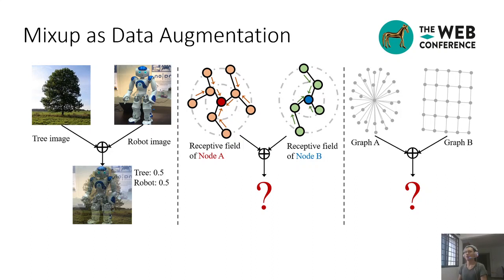Graph neural networks learn nodes' representations via the message-passing mechanism, which aggregates the representations between each node and its neighbors at each layer. As a result, the representation of a node relies on the nodes and edges inside its receptive field, all of which act as its features. Thus, to mix a pair of nodes, we need to mix their receptive field subgraphs, which consist of nodes and topology.